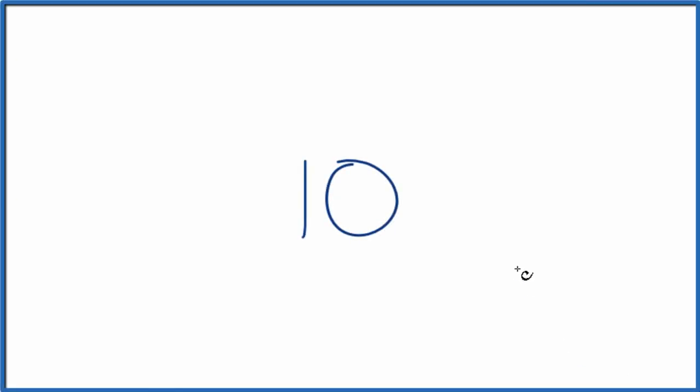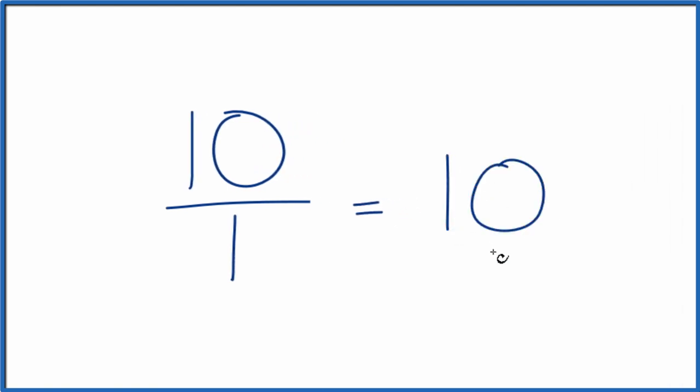Here's how you find three equivalent fractions for the whole number 10. First off, we're going to consider this to be 10 over 1. That's because 10 divided by 1 is still 10. It's just that now we have a fraction. This is equivalent. This is an equivalent fraction to the whole number 10.